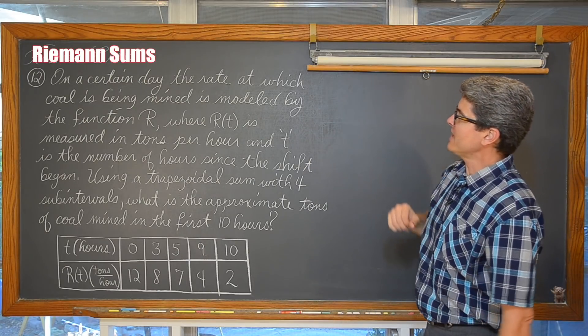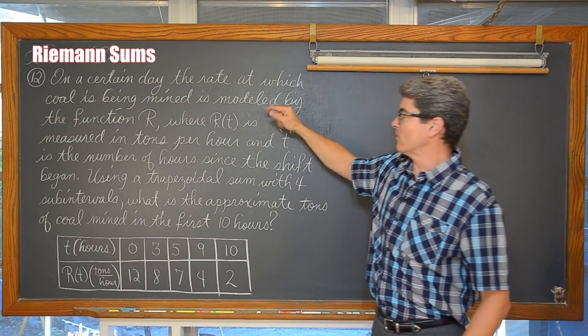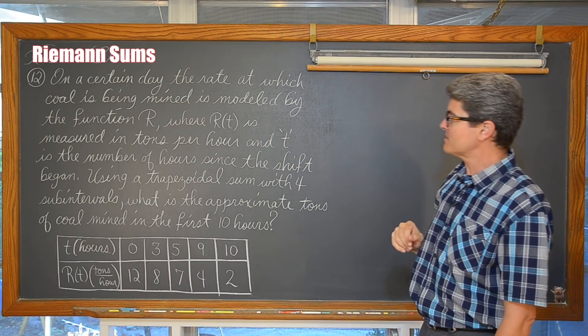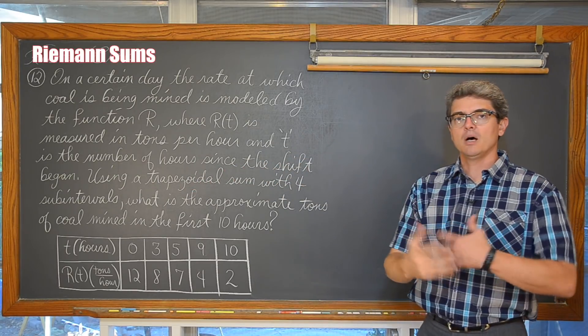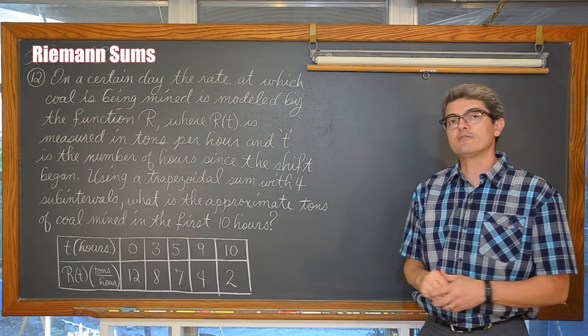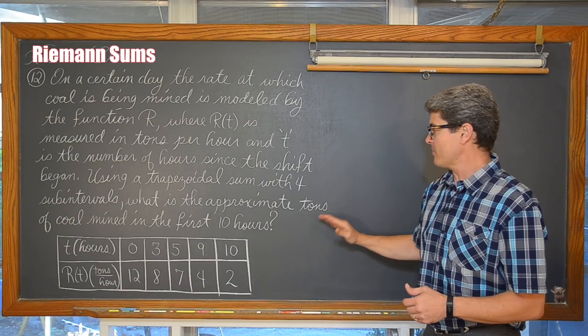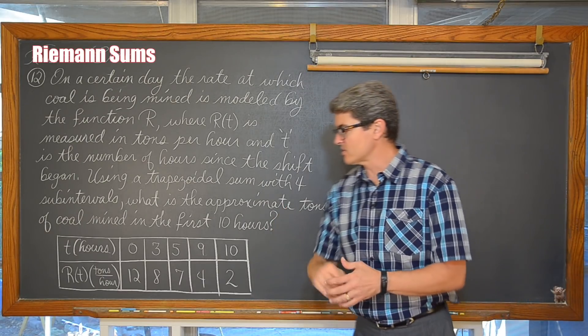On a certain day the rate at which coal is being mined is modeled by the function R, where R is measured in tons per hour and t is the number of hours since the shift began on this particular work day. Using a trapezoidal sum with four subintervals, what are the approximate tons of coal mined in the first ten hours on this shift?